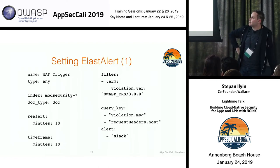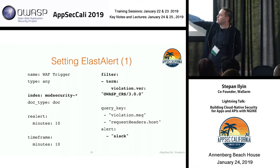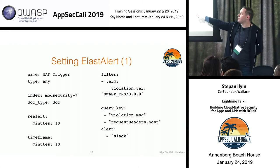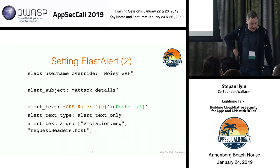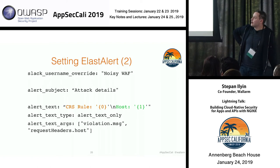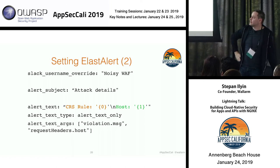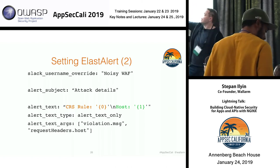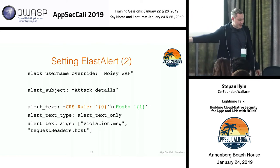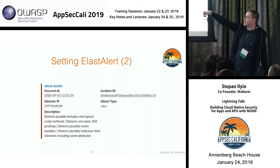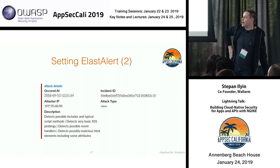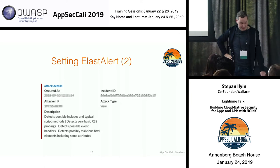Setting up ElastAlert is very easy - you basically create a trigger, which I call a WAF trigger. You use the data from ModSecurity, take data within a 10-minute time frame, and use filters to tell ElastAlert when to send a notification. When the trigger fires, you configure it to send a Slack message. You put in the details of the Slack bot - the name - and send a notification saying the CRS rule fired, with the host and path. Eventually, you'll see different kinds of alerts right in your Slack channel - a super scalable way to get real-time understanding without going to dashboards.